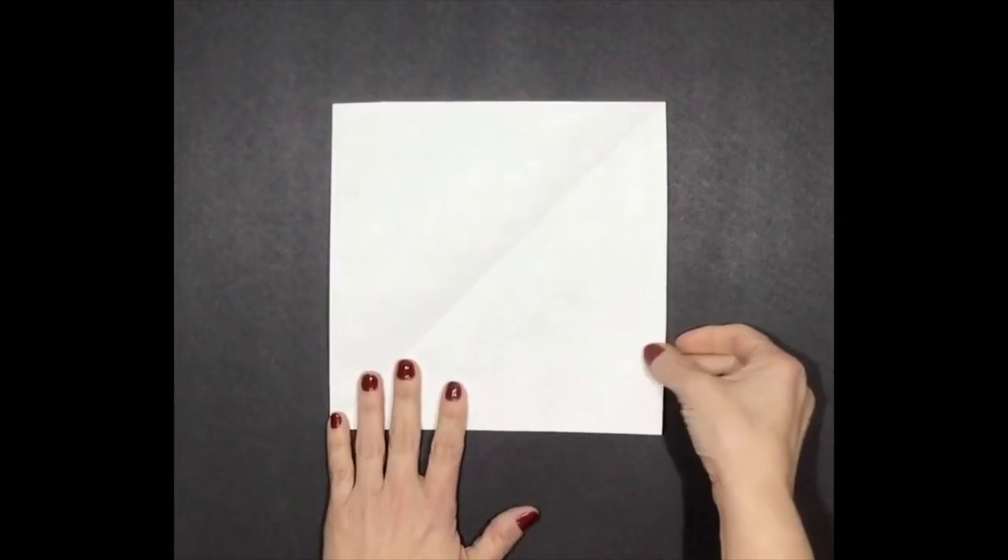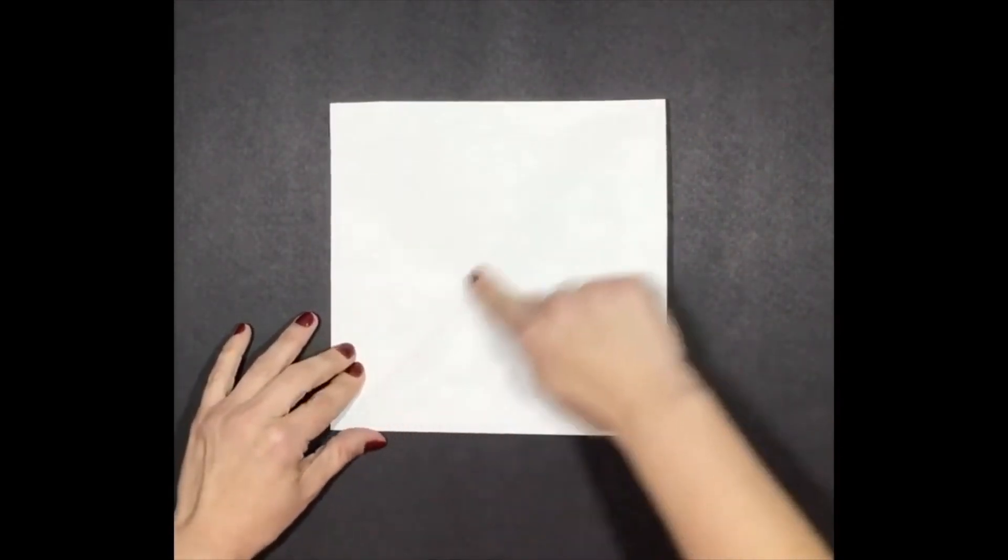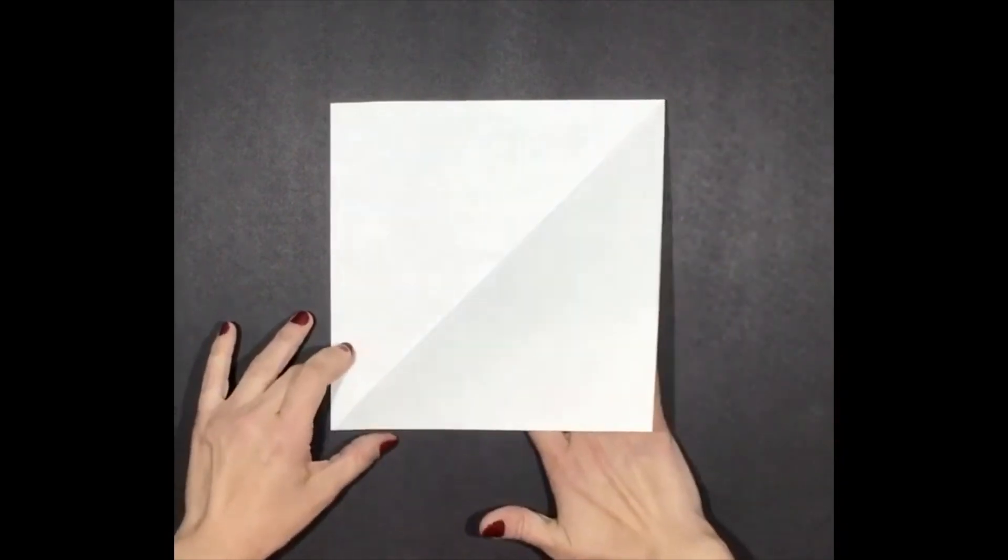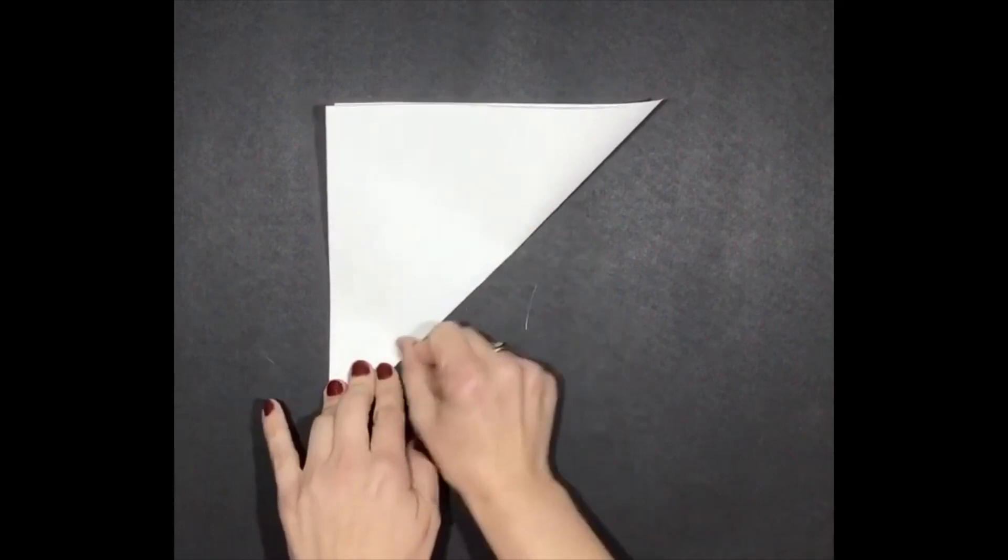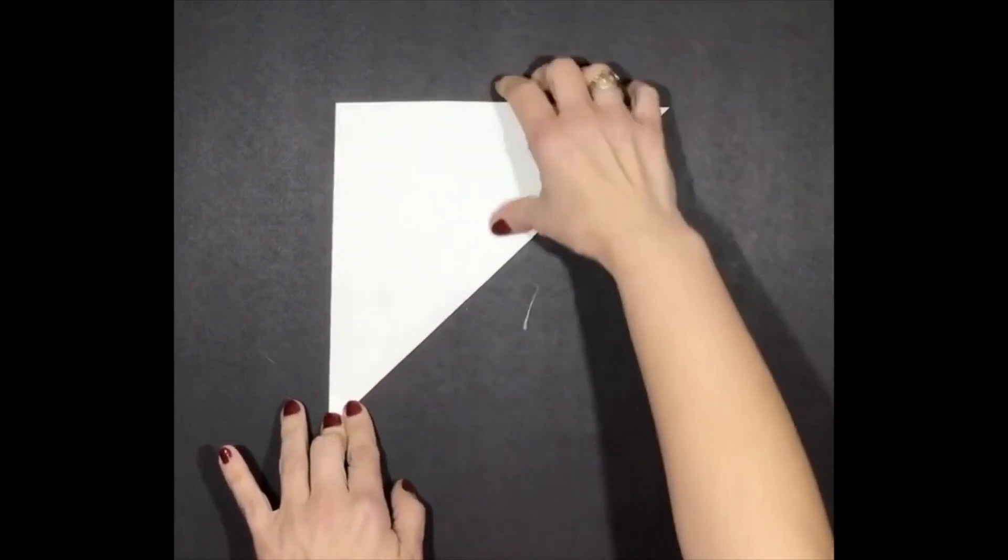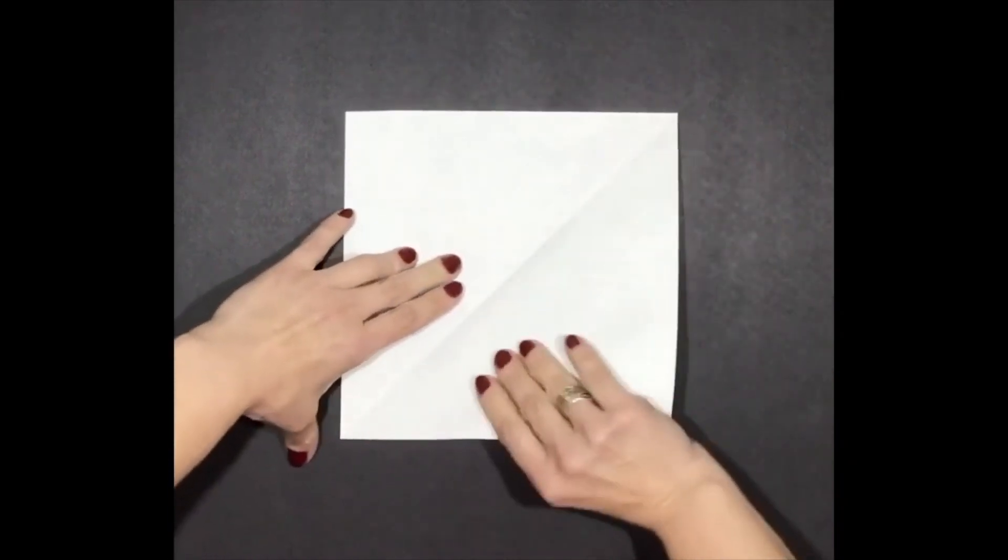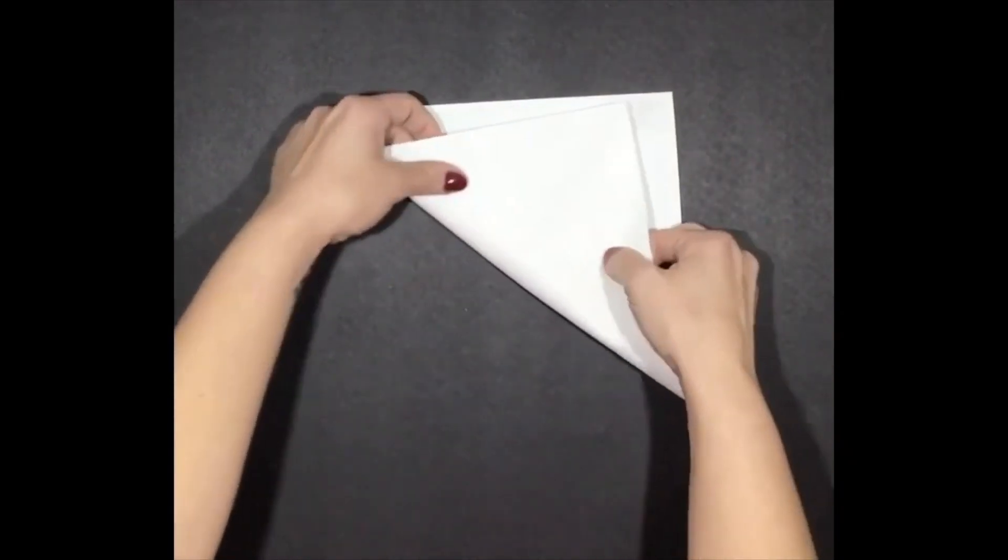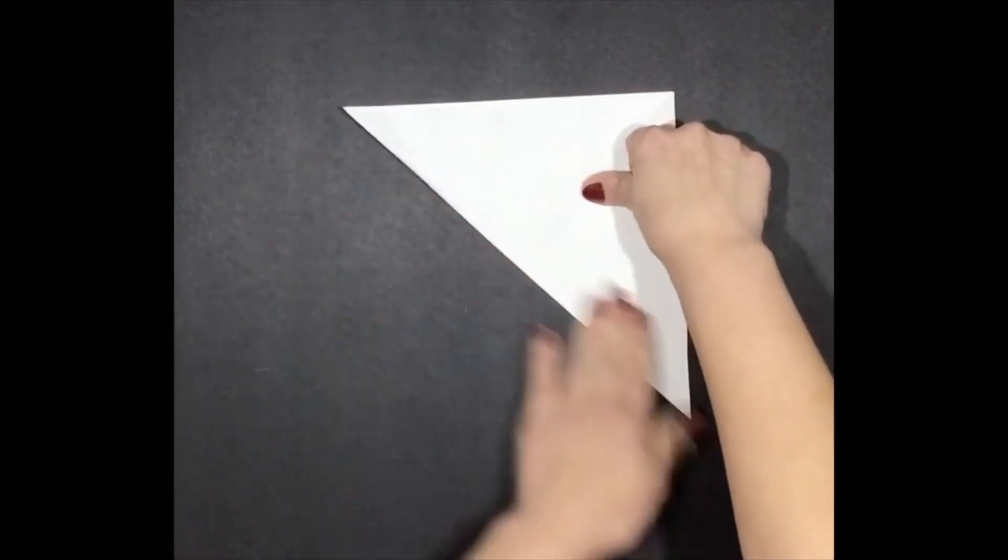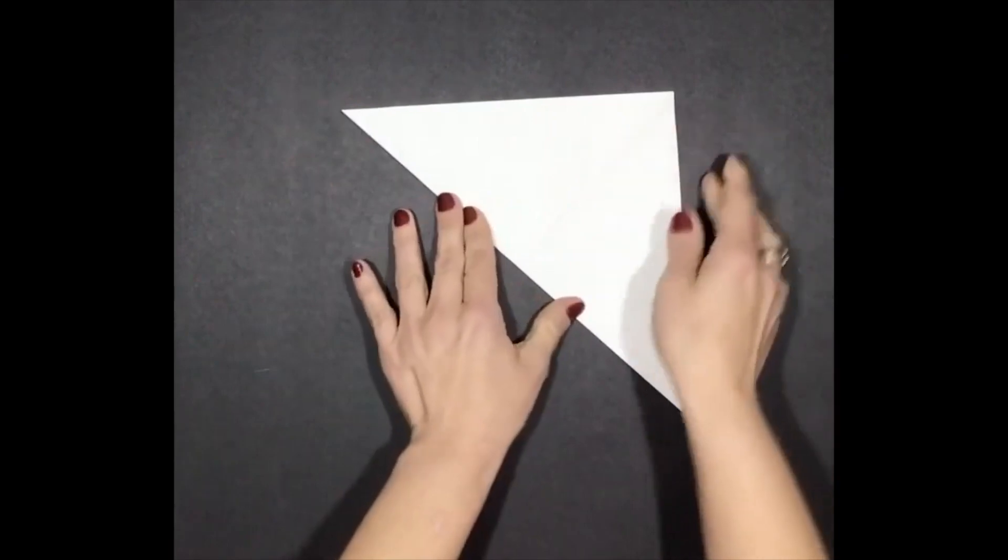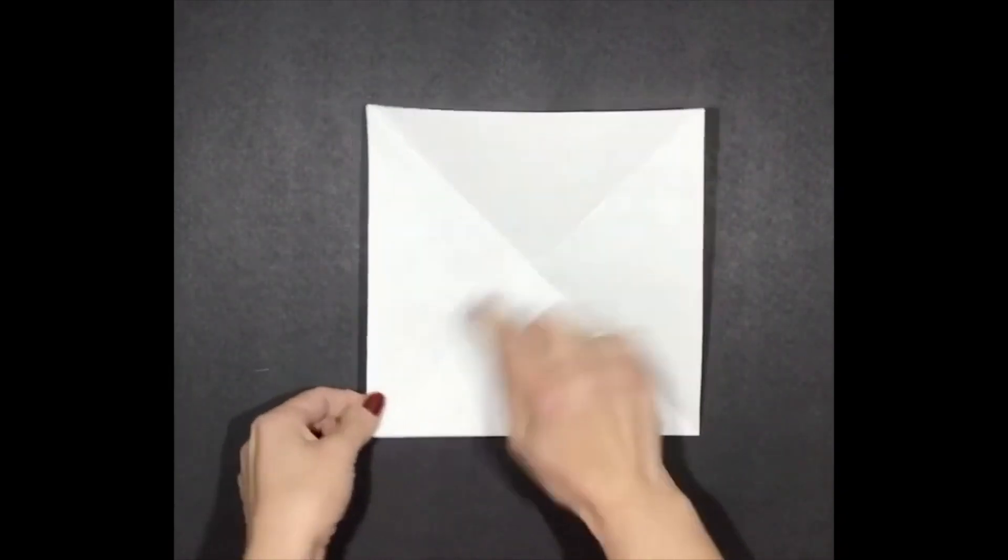All right, so now we're ready. We have our square. Our first step is you're going to fold it in half corner to corner, push hard on the crease, and then you're going to open it up. Then you're going to take this piece of paper and fold it again corner to corner. You're doing this so that you're creating an X inside the paper. When you open it up, you're going to see an X.